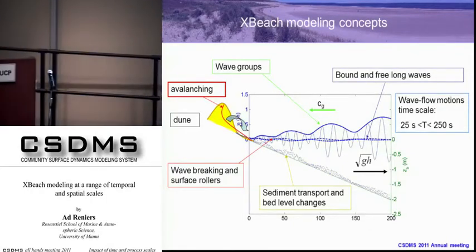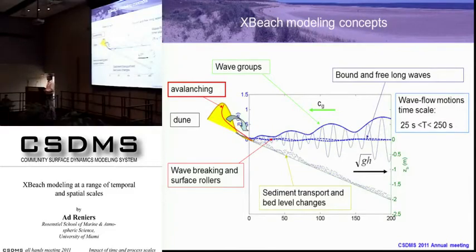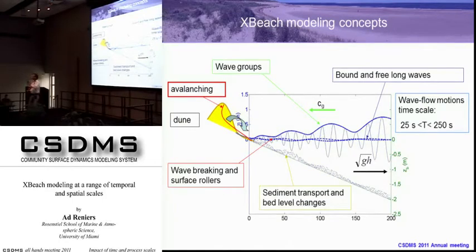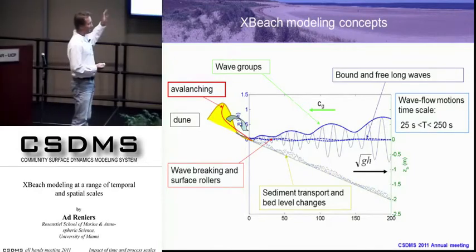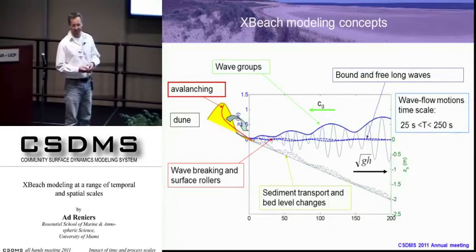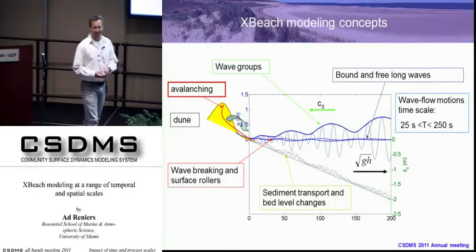The other part is avalanching. As these waves run up the dune face, it mobilizes the sand. And if the slope gets too steep, it avalanches. The sand gets deposited from the dune into the foreshore, where it gets transported by waves and currents. So avalanching is important, and wave groups are important.